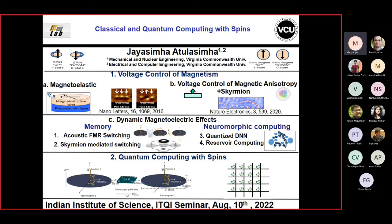The talk will look at three different parts. The first is basic experimental demonstrations on how we can use voltage to control magnetism at the nanoscale. One is the magneto-elastic effect where you apply a strain - the strain from the piezoelectric layer produces a strain in the magnetostrictive layer, deforming the lattice. Because of spin-orbit coupling, when you deform the lattice, the spin also rotates, and that's how you rotate the magnetization.